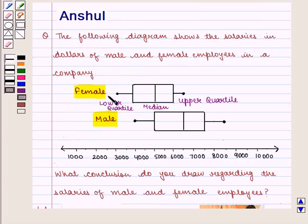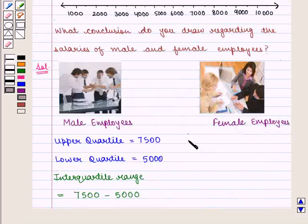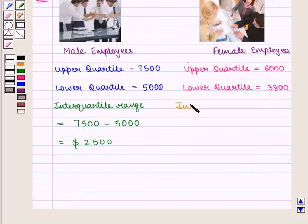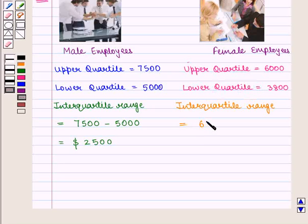Similarly, for female employees, we see that the lower quartile is given by $3,800 and the upper quartile is given by $6,000. Therefore, the interquartile range will be given by upper quartile minus lower quartile, that is 6,000 minus 3,800, which is equal to $2,200.